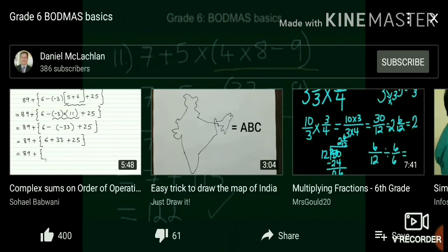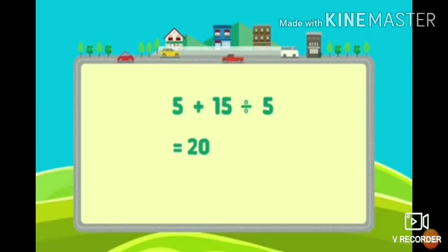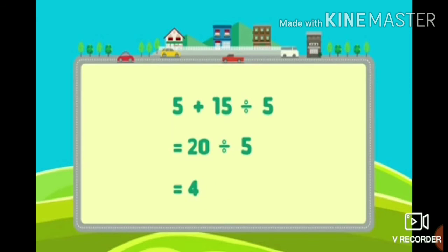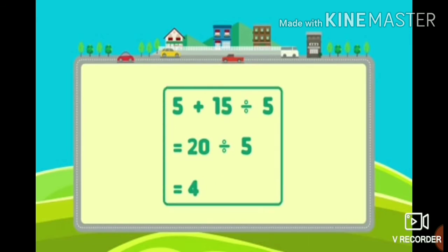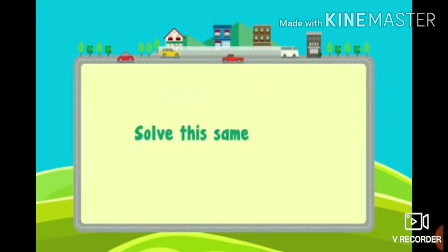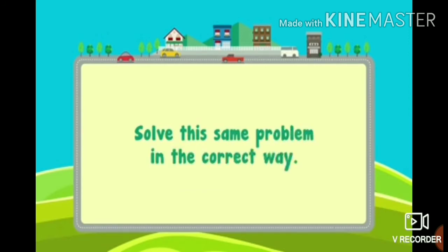According to the BODMAS rule, the order is: first Division, next Multiplication, next Addition, then Subtraction. See this problem — it is wrong because they have used addition first. Which operation do we have to use first? That is division. So solve this problem in the correct way.